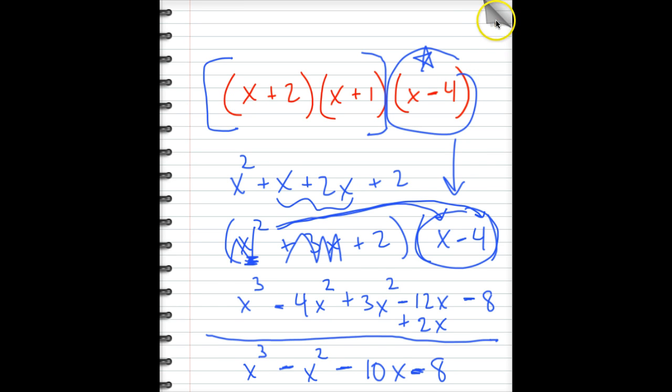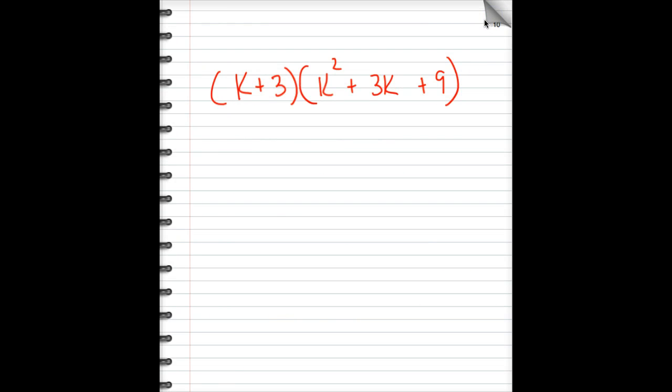One more example to finish up here. Here we have (k + 3) times (k² + 3k + 9). Very much like the prior example, where you have two terms here, a binomial, and three here, a trinomial. Well, just grab a term and multiply it to everything over here. Do that first. k times k², k³. k times 3k, 3k². k times 9, 9k. Okay, that's done. It got used up.